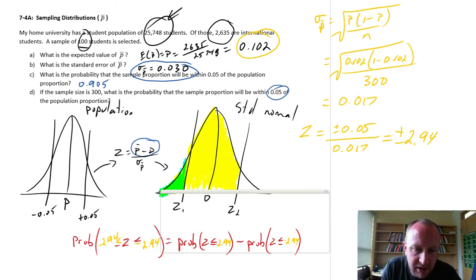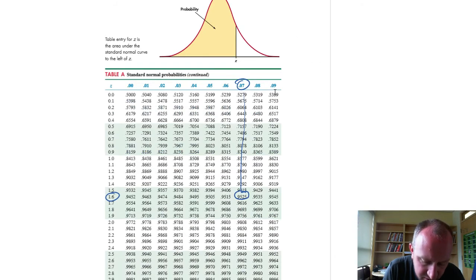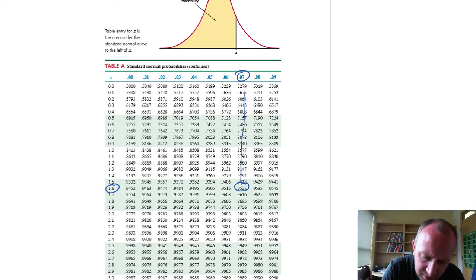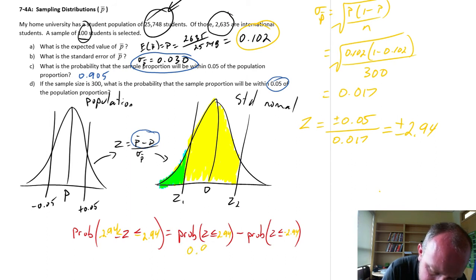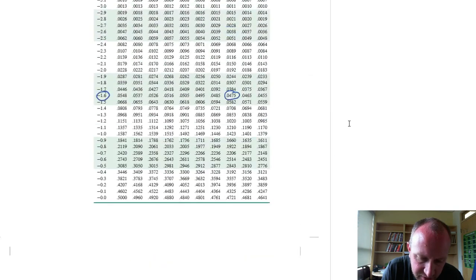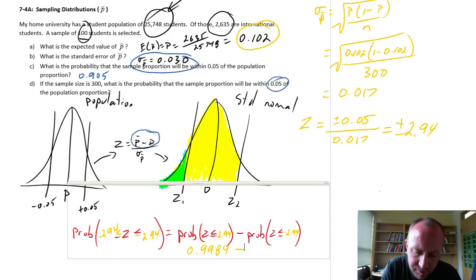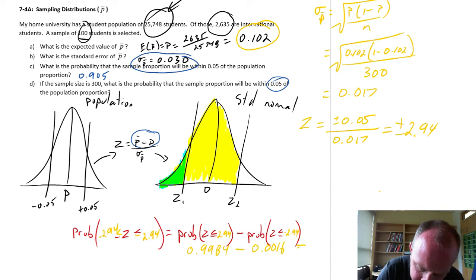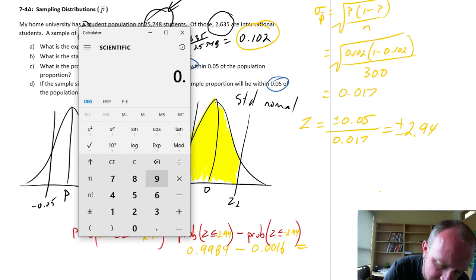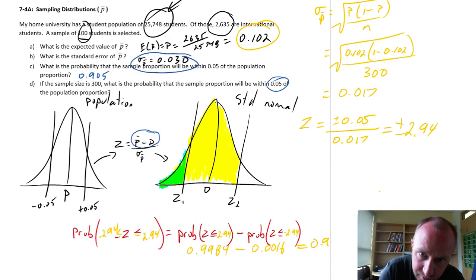So when we get our probabilities now, we'll go to our Z tables. Let's start at the positive 2.94. There's 2.94. So that gives me 0.9984. So this is 0.9984 minus, let's go back to our tables down to the negative, that gives us 0.0016. So that gives us 0.9984 minus 0.0016 equals 0.9968.